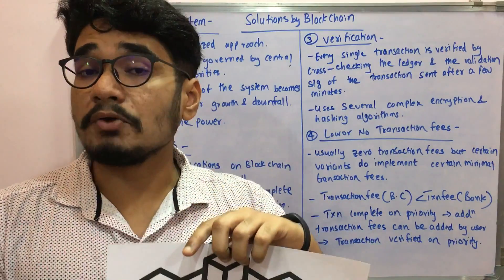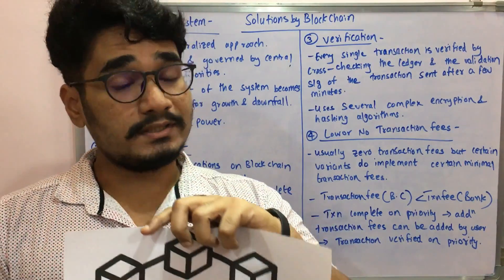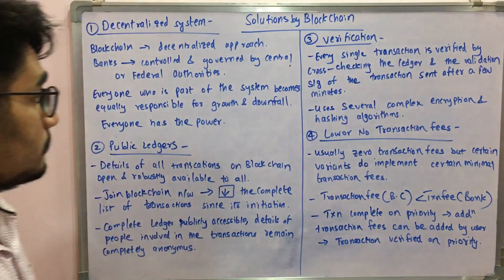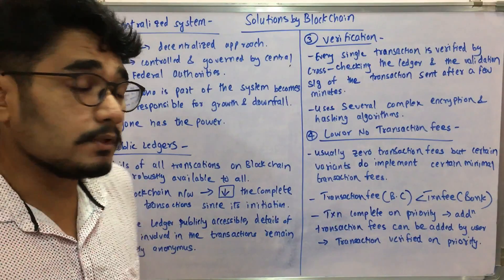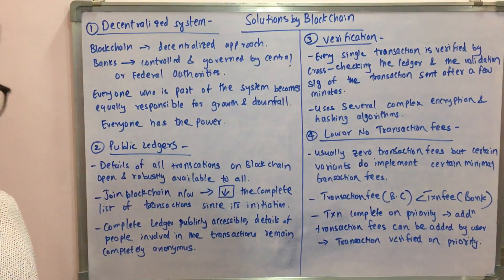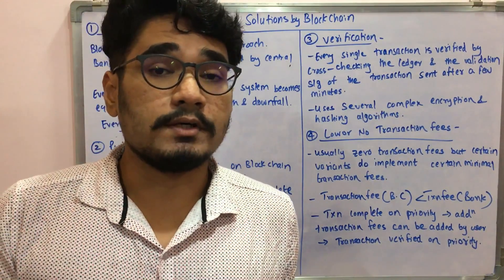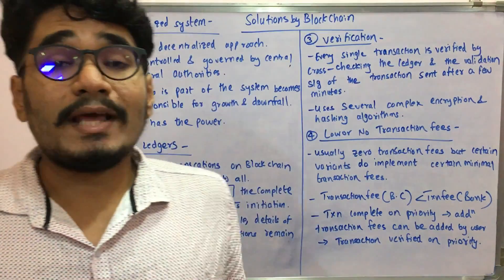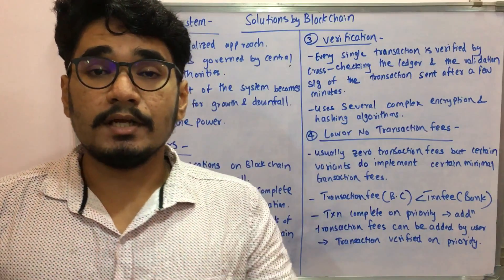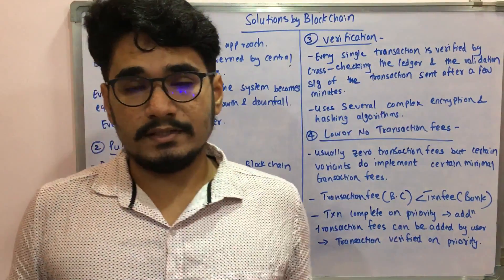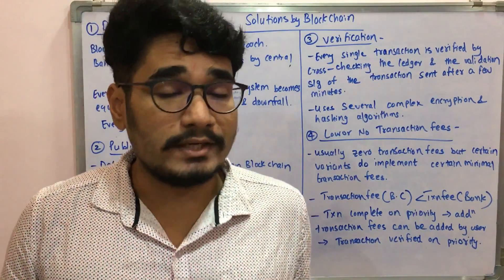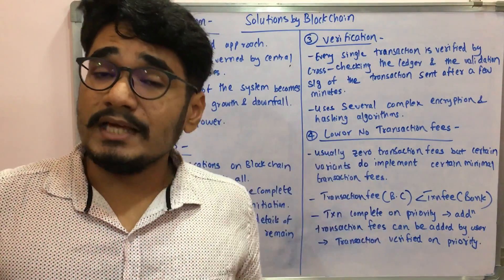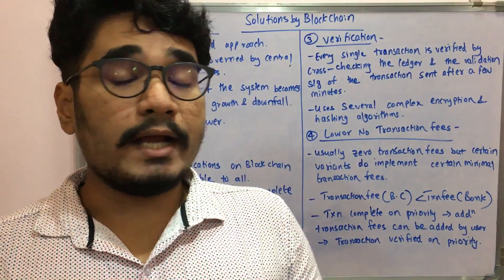In a decentralized approach, everyone involved in the network is equally responsible for all activity. Everyone who is part of the system is equally responsible for its growth as well as its downfall — everyone has the power to bring the system up or bring it down. Blockchain functions entirely in a decentralized manner, not in a centralized way.